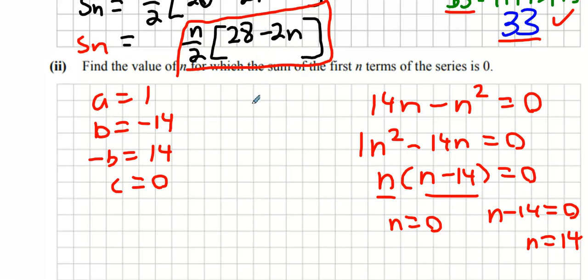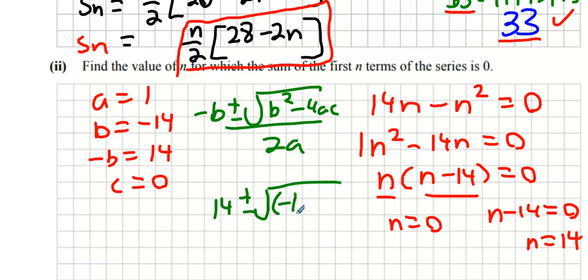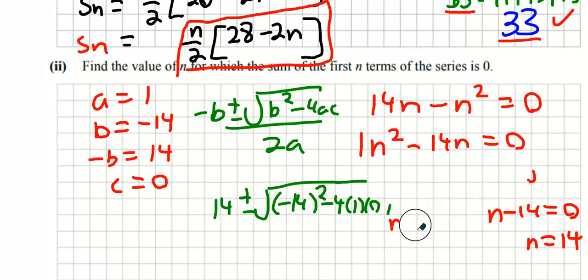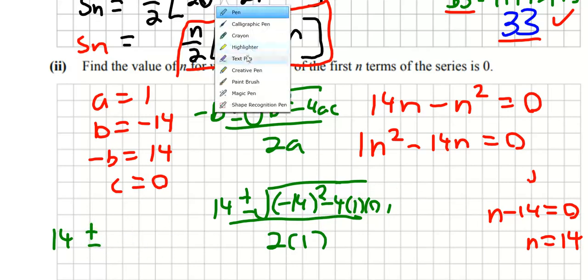Then you're going to use the minus b formula like so. Okay, then you're just going to get 14 plus or minus the square root of minus 14 squared minus 4ac which is one times zero, all over two times one.